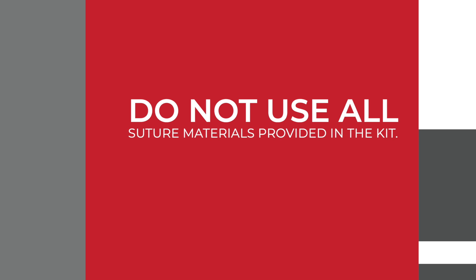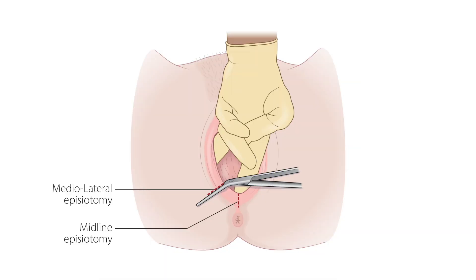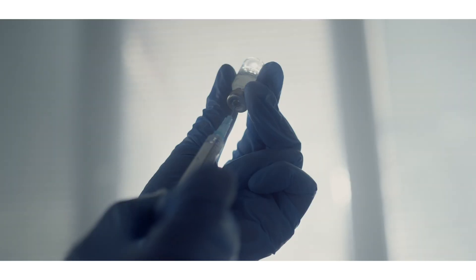Please ensure you do not use all the suture materials provided in the kit, as they will be needed for upcoming C-section projects. For this project, we will be practicing the medio-lateral episiotomy, where an incision is made at an angle away from the midline towards one side of the perineum.